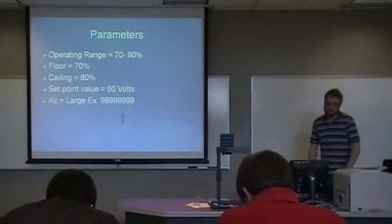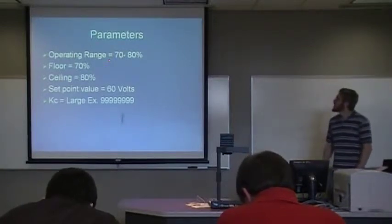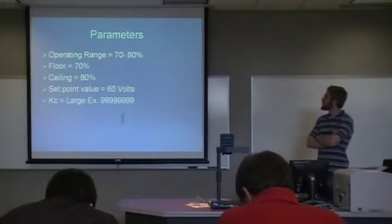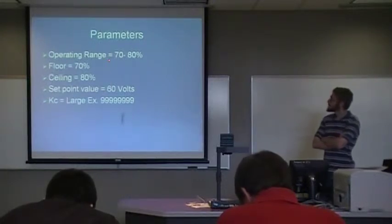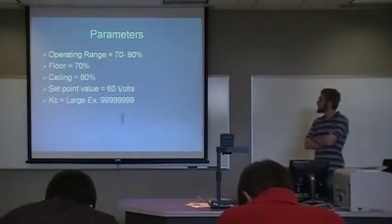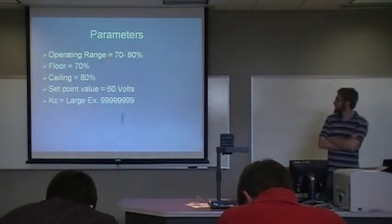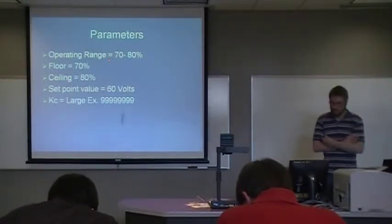Here's the parameters for the relay. 70 to 80% motor speed. The floor is 70%, the ceiling is 80%, the set point value for the output voltage is 60 volts, and a large Kc value.